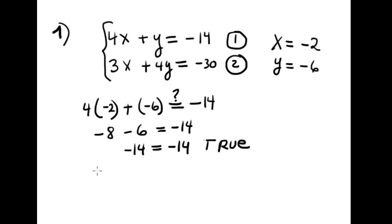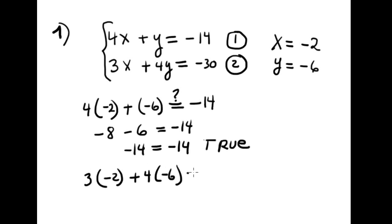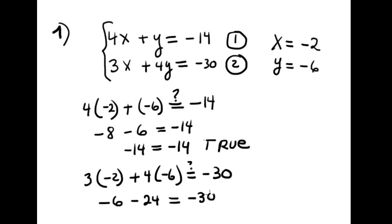Now let's check the second equation: 3 times negative 2 plus 4 times negative 6 should equal negative 30. That is negative 6 plus negative 24, which equals negative 30. Negative 30 equals negative 30 — true also.